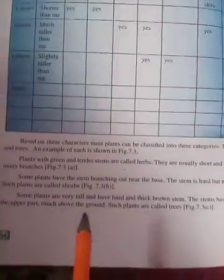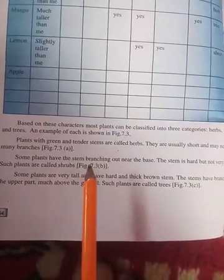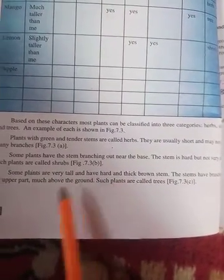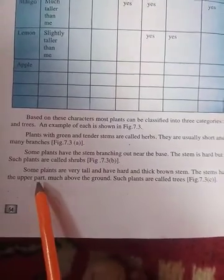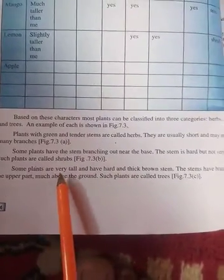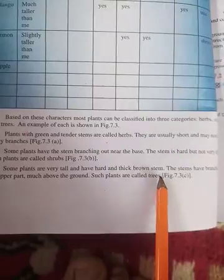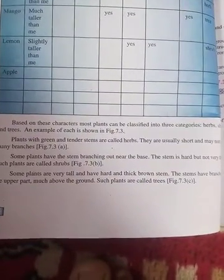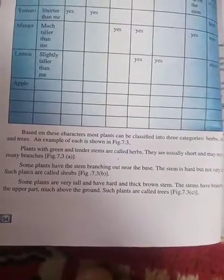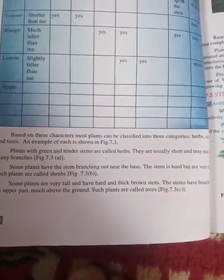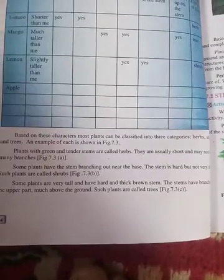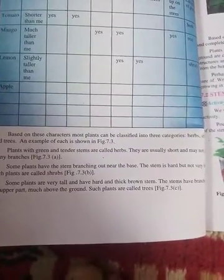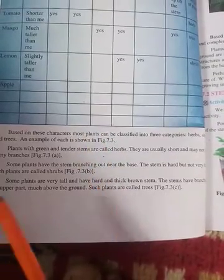Plants whose stem is very hard and have branches on the upper part, much above the ground, are called trees. To summarize: herbs have soft stems, shrubs have hard stems, and trees also have hard stems. Trees are the largest in size, herbs are the smallest, and shrubs are in between.